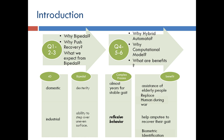One motivation for bipedal robots is that we have developed our infrastructure — buildings, railings, staircases — for bipedal human beings. If we develop machines with similar capabilities, we can utilize existing infrastructure. Human walk is very adaptable and scalable. Bipedal machines can manage with two limbs what would be difficult for wheeled or four-legged systems — for example, jumping over a canal. Human walk, also referred to as GAIT, is very important and we will try to simulate it so robots can utilize it.